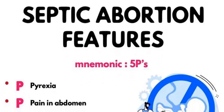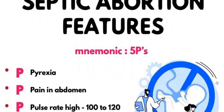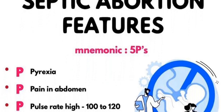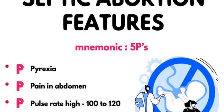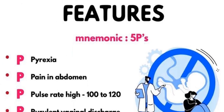The second P is Pain, which specifically occurs in the lower abdomen — this is another clinical feature of septic abortion. The third P is Pulse: if the pulse rate is very high during physical examination, ranging from 100 to 120, this can also indicate septic abortion.